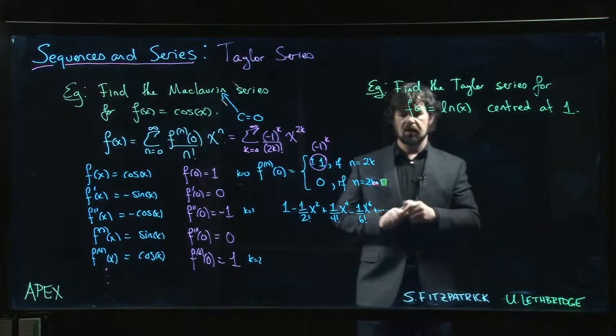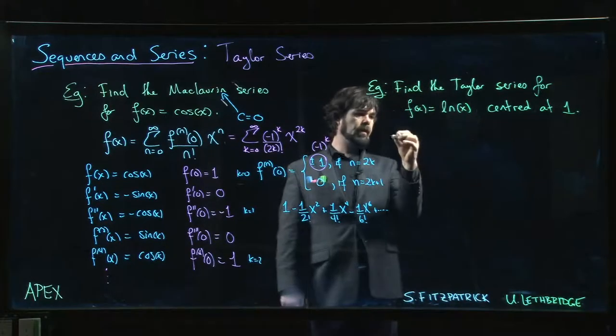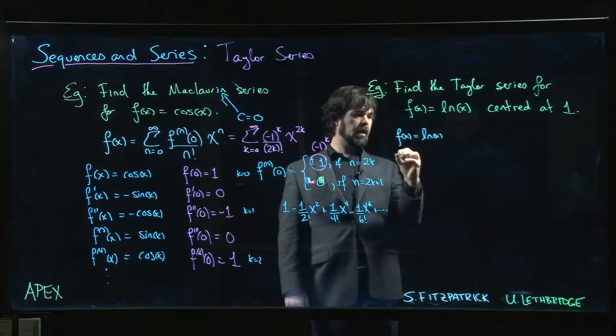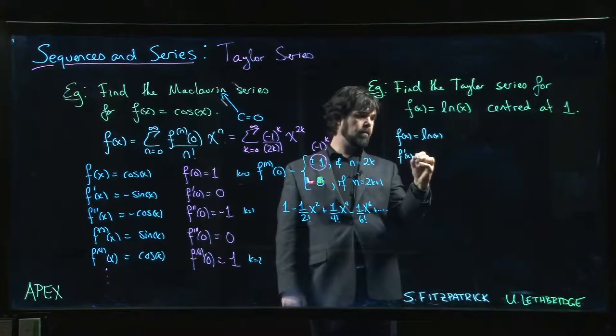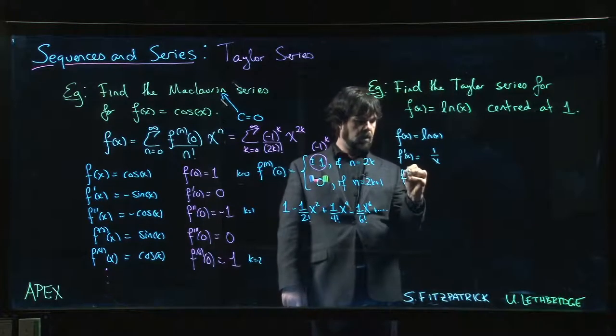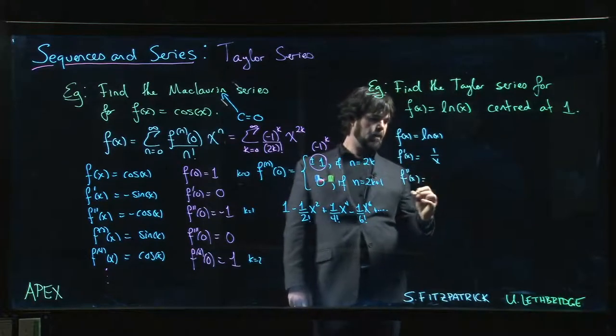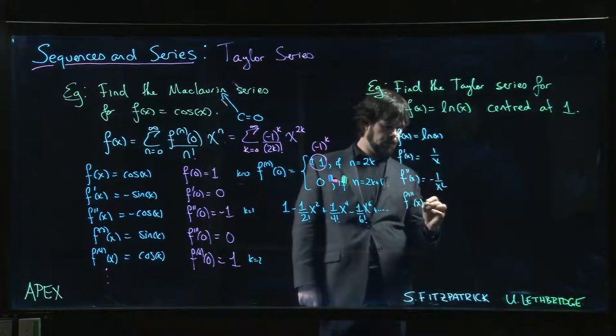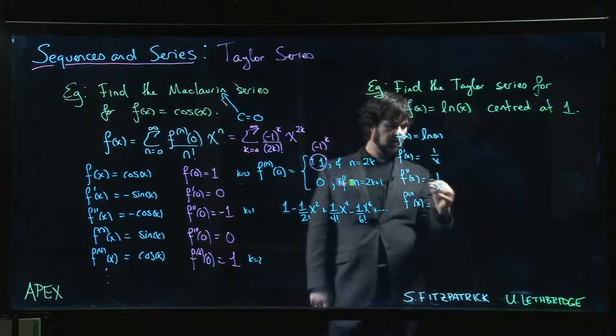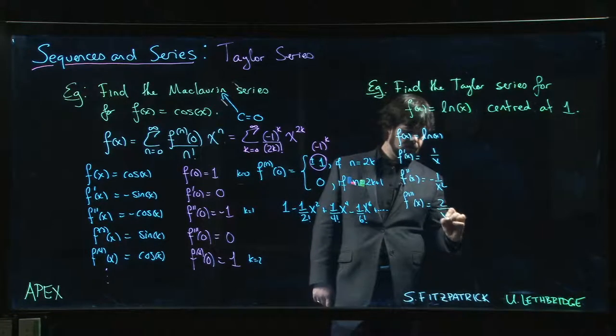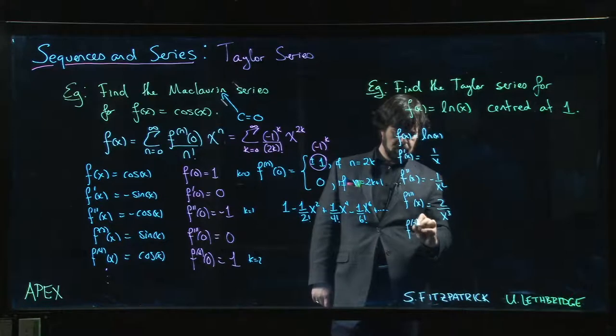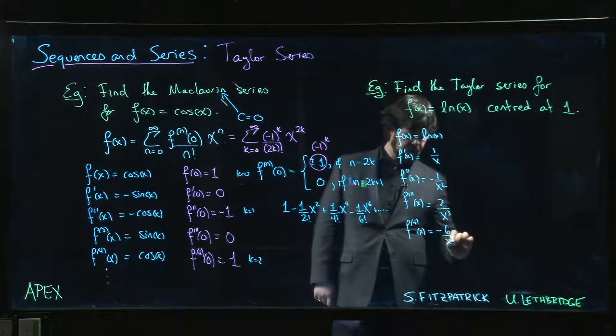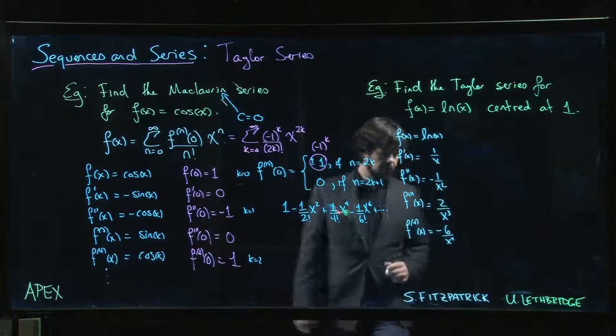Same routine. We start taking derivatives. We start evaluating. f of x is log x. f prime, 1 over x. f double prime is minus 1 over x squared. f triple prime is going to be, so that's minus 2, so we get 2 over x cubed. Fourth derivative, we get minus 6 over x to the 4. And so on.